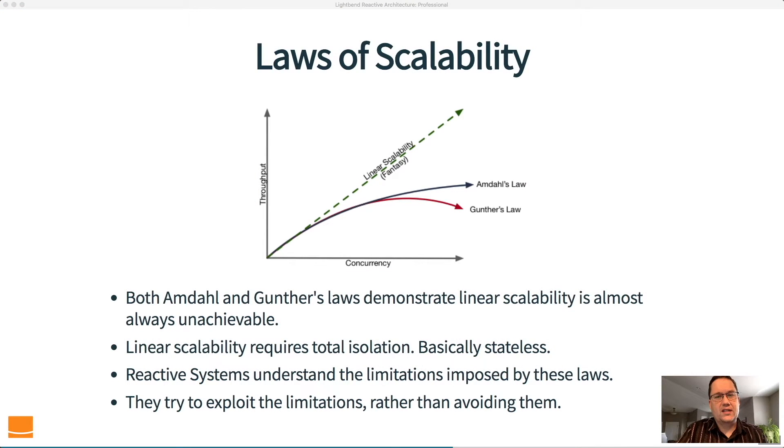So both of these are showing us that linear scalability is almost always unachievable. Linear scalability requires total isolation. We basically need a system that's stateless. And when we talk about stateless, we don't mean stateless in the sense that the state is stored in the database. We mean truly stateless. There is no state.